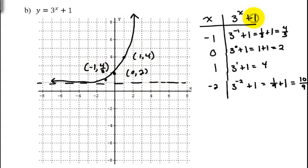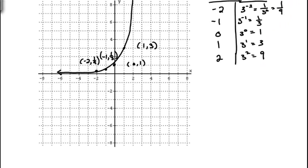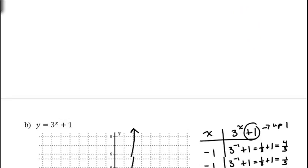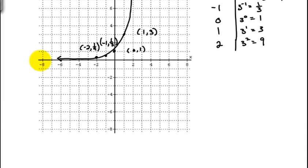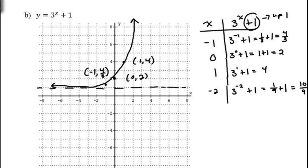Just like with other functions, this is a transformation — it moves our graph up one unit. So we took the previous graph and shifted it up one unit. On the original graph, the asymptote was the x-axis. On this shifted graph, the asymptote is the line y = 1.